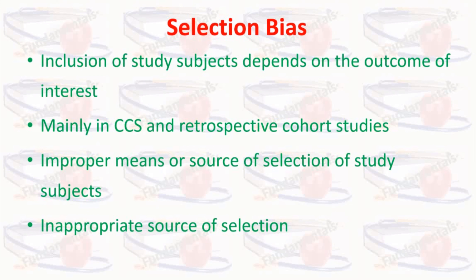Another source of selection bias could be due to an inappropriate source of selection — for example, cases selected from hospitals and controls from household services. In this case, a number of demographic and lifestyle variables could differ between cases and controls, leading to non-comparability between groups and incorrect results with respect to the association between exposures and outcomes.